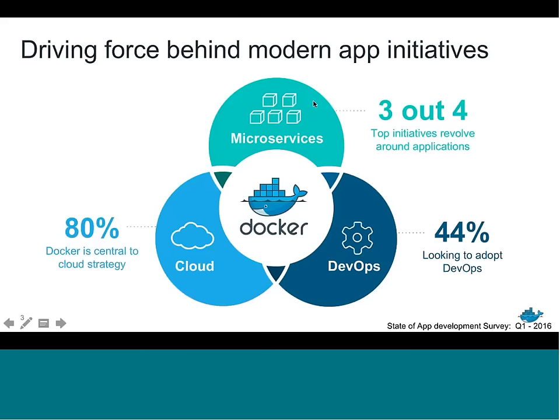We're not just doing this to do it — we've identified three key enterprise initiatives taking place today that we aim to enable. The first is microservices: loosely coupled services that come together to form an application. This is how new applications are being built. In the past it was all about monolithic applications sharing the same code base, but over time they became more complex, difficult to manage, and expensive. Now teams are pivoting to create microservice-based applications, and three out of four companies are looking to embrace microservices.